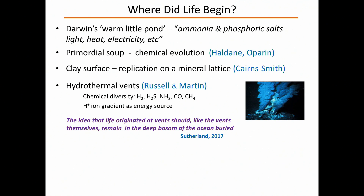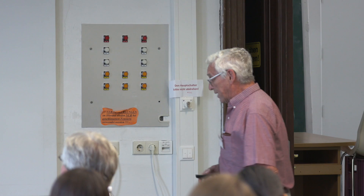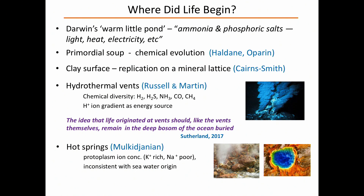The most recent proposal is the hot springs idea from Armin Mulkidjanian, who said the ocean environment is not an appropriate one because protoplasm cells are rich in potassium but poor in sodium — and that's inconsistent with a seawater origin where the ion concentration is exactly the opposite. So you can see what amazing advances we've made: Darwin started off with a warm little pond and we now believe it happened in a hot spring. That's 160 years of progress.